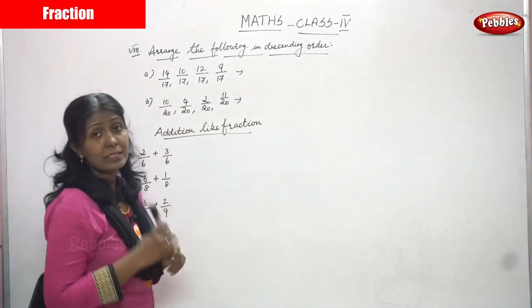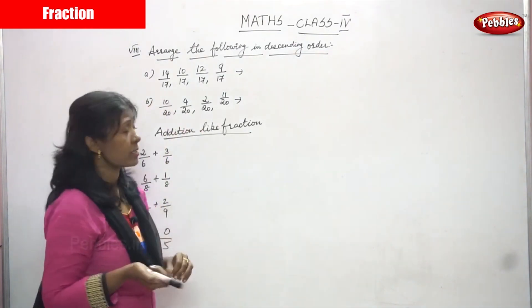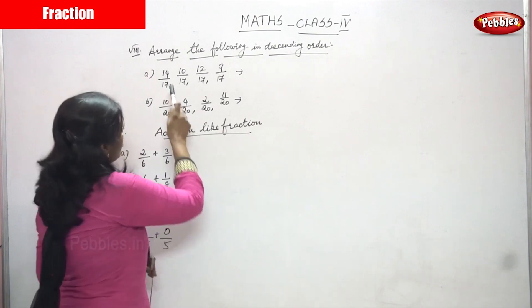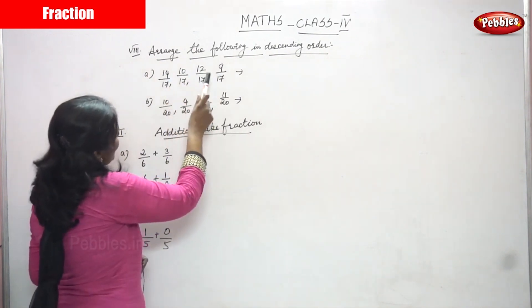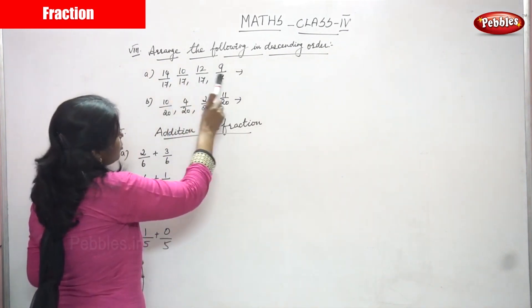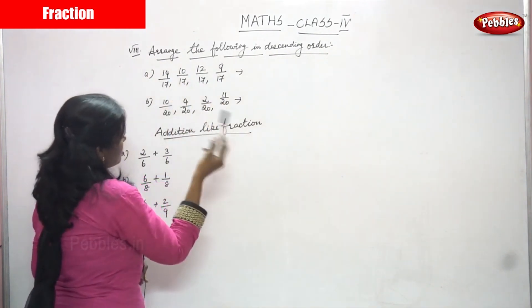So now we are going to look at the numerators. The numerators are different: 14, 10, 12, 9 — all the numerators are different.